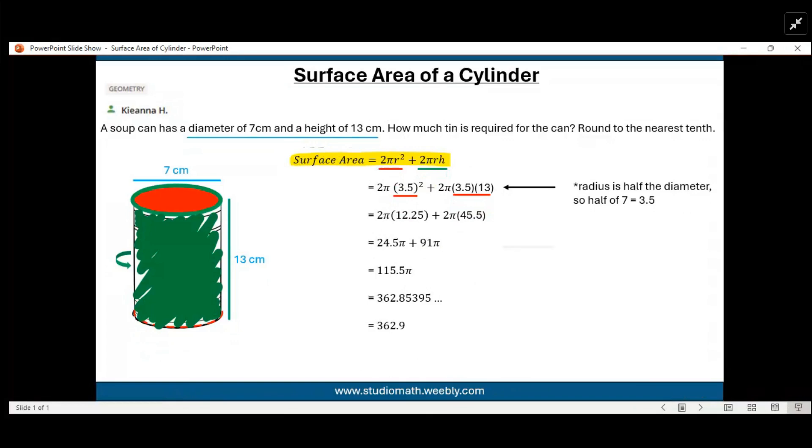We then simplify and get 2π times 12.25 plus 2π times 45.5. We simplify yet again and get 24.5π plus 91π. These two terms are like terms, so we can combine them and get 115.5π.